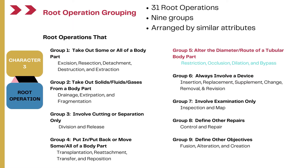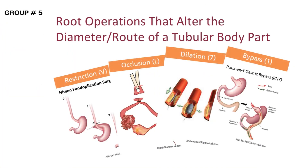Today we are talking about the fifth group of root operations that alter the diameter or route of a tubular body part. There are four root operations in this fifth group: Restriction, Occlusion, Dilation, and Bypass.